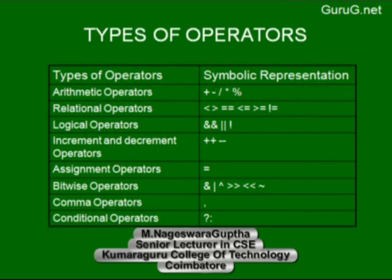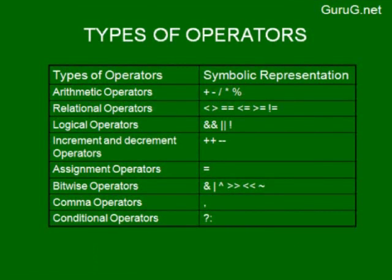The assignment operator is '='. Bitwise operators include bitwise AND, bitwise OR, bitwise NOT, right shift, left shift, and XOR (tilde). The comma operator is used to separate variables and format specifiers. The conditional operator checks a condition — if the condition is satisfied, the block before the colon is executed; if not satisfied, the block after the colon is executed.